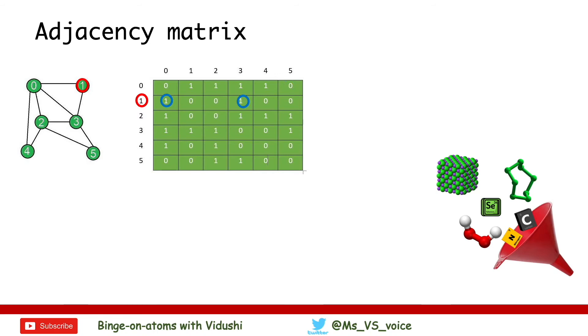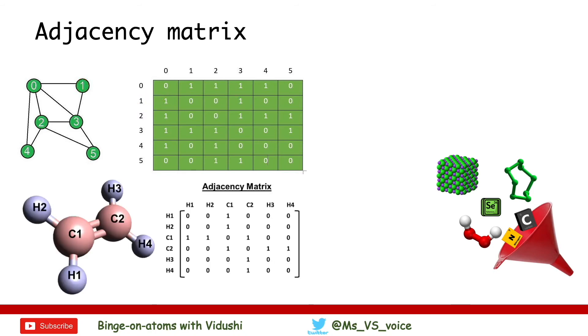We trace neighbors for each atom in the row and column format where diagonal is 0. This matrix is symmetric and also binary.